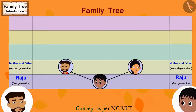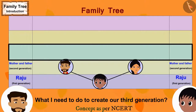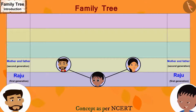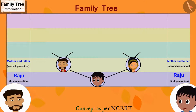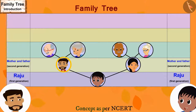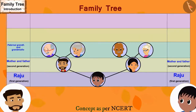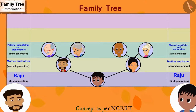Raju, now can you tell me what I need to do to create our third generation? Father, you have to draw two lines each above your and mother's names. You have to write maternal grandfather and grandmother's names on the two lines above mother's name. And on the two lines above your name, you will write paternal grandfather and grandmother's names. That's correct, Raju. Saying this, Raju's father wrote the names of Raju's paternal grandfather and grandmother and maternal grandfather and grandmother.